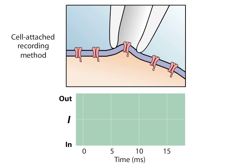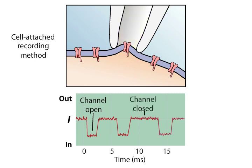A record of the current flowing through a single ion channel reveals when the channel is in an open or closed state. The currents flowing through single channels are called microscopic currents, to distinguish them from the macroscopic currents flowing through a large number of channels distributed over a much more extensive region of surface membrane.